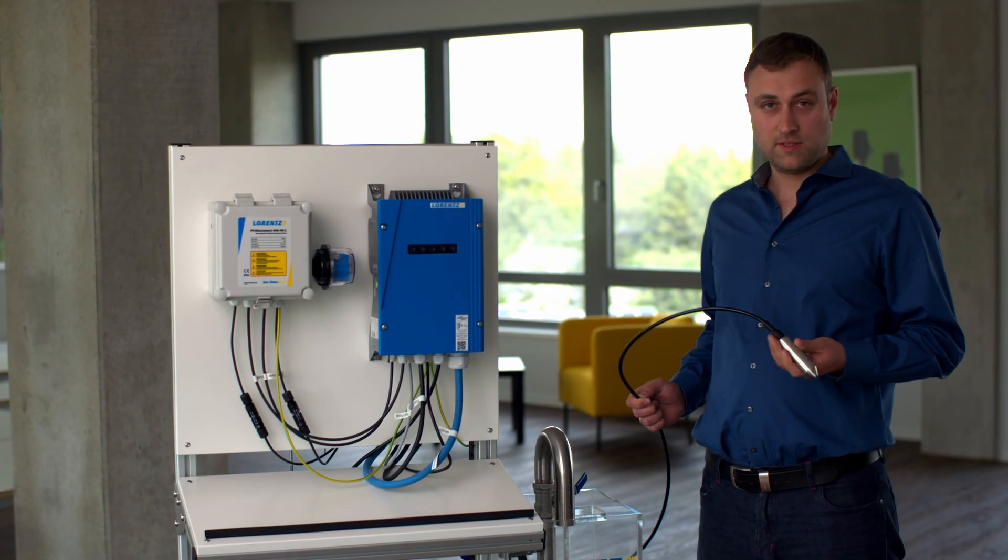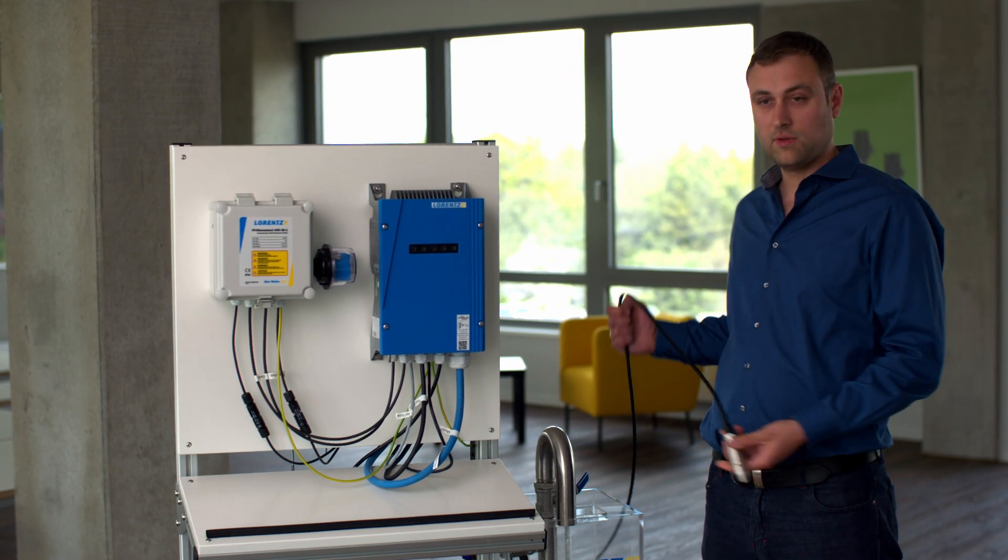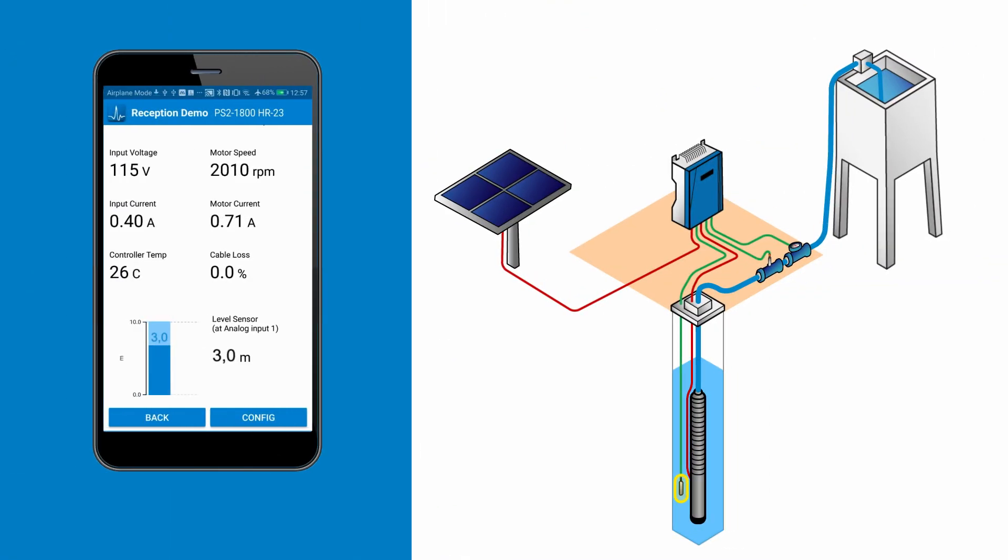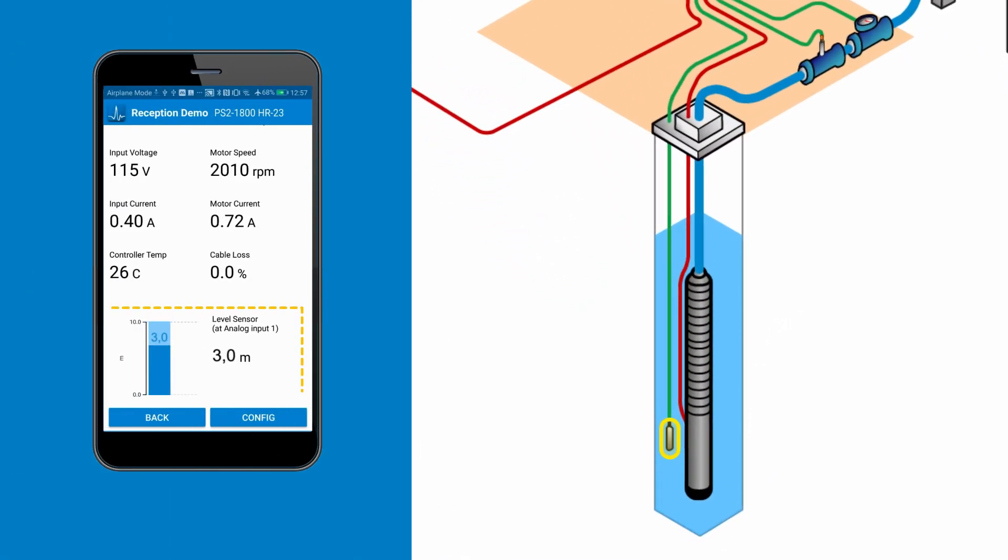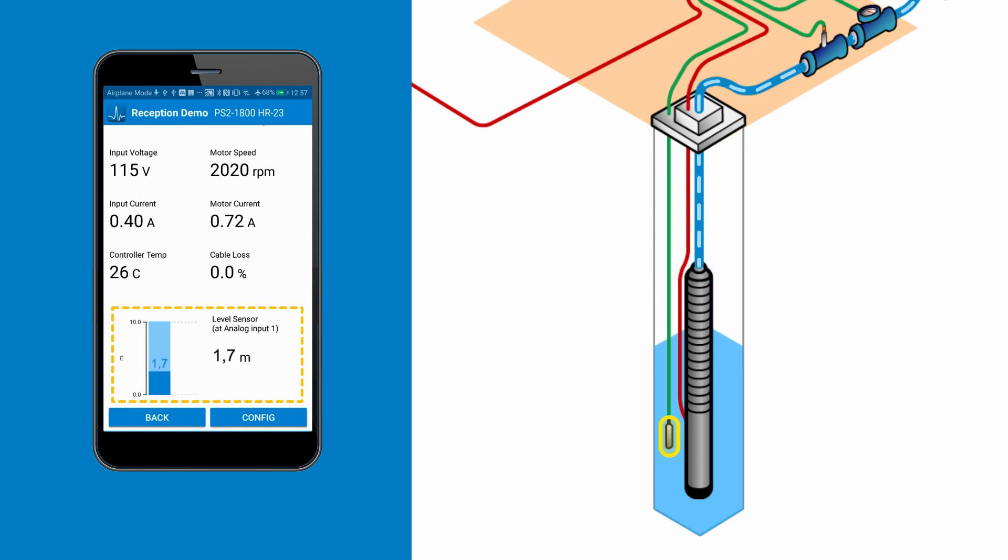With a liquid level sensor you can control the pump's behavior based on a water level. The controller accurately measures the water level above the sensor. The level measured could be a water level, like in a borehole or in a storage tank.